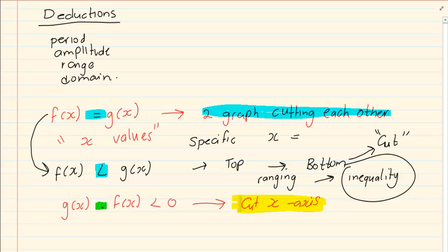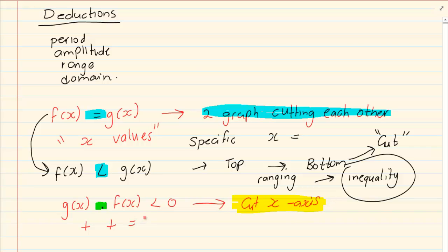Now the first thing you need to know is when I'm doing a multiplication, I'm emphasizing the x-axis. The second thing you need to know is that a plus and a plus give me a plus, a minus and a plus give me a minus, and a minus and a minus also equals a plus.